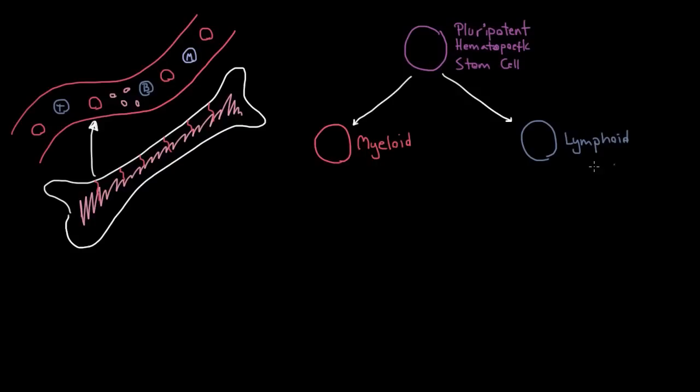So now it turns out that this lymphoid progenitor cell can make actually three different kinds of immune cells in our body. It makes an NK cell, it makes a B cell, and it can make a T cell. And this is three out of our ten blood cells that we talked about, and so the other seven are going to be from the myeloid lineage.